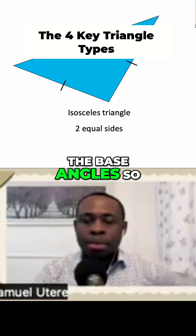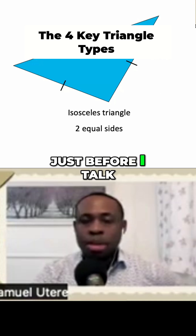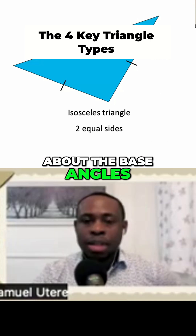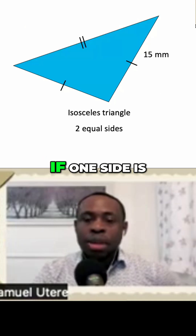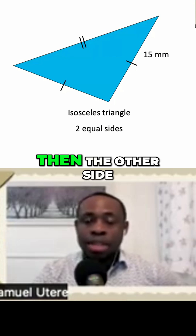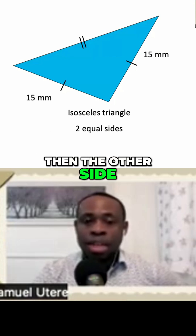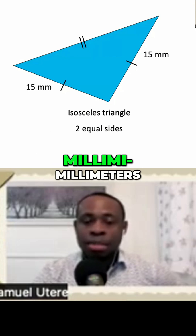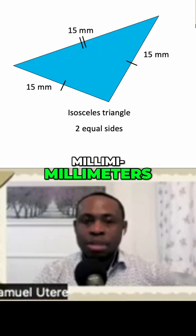The base angles — so just before I talk about the base angles, if one side is 15 millimeters, then the other side has to be 15 millimeters.